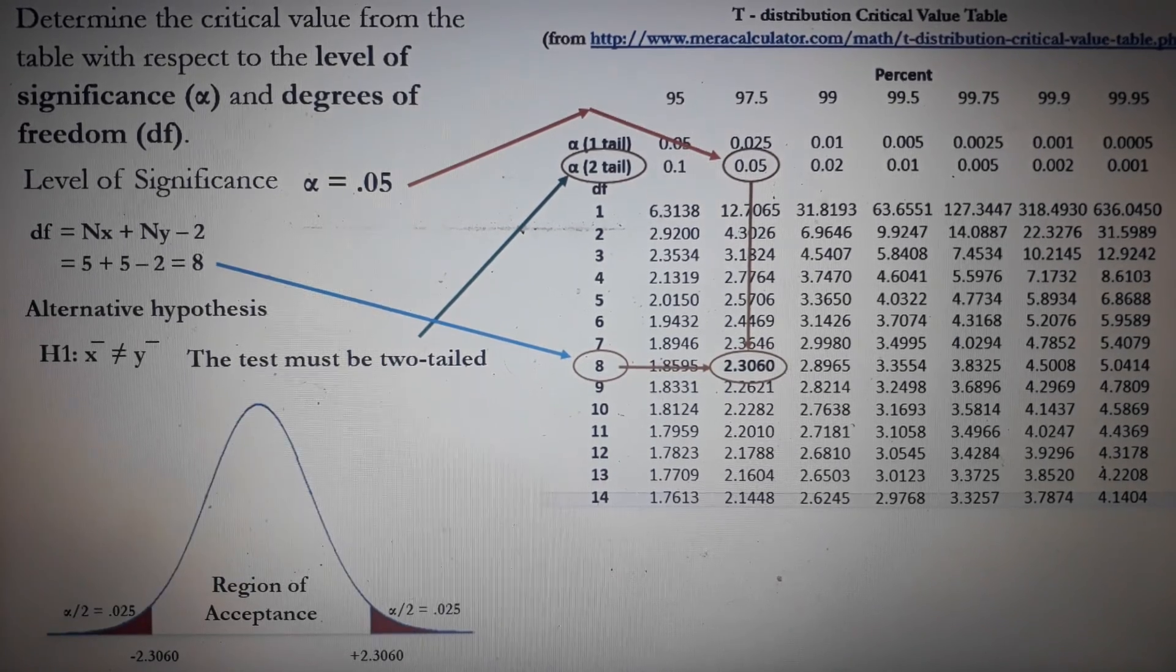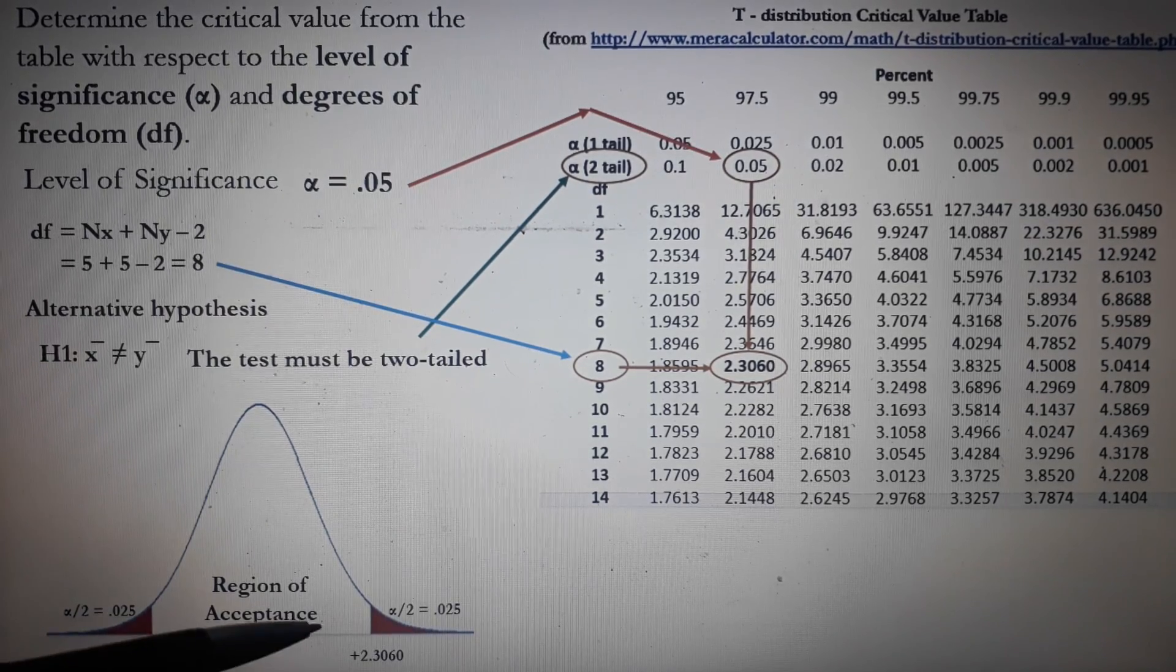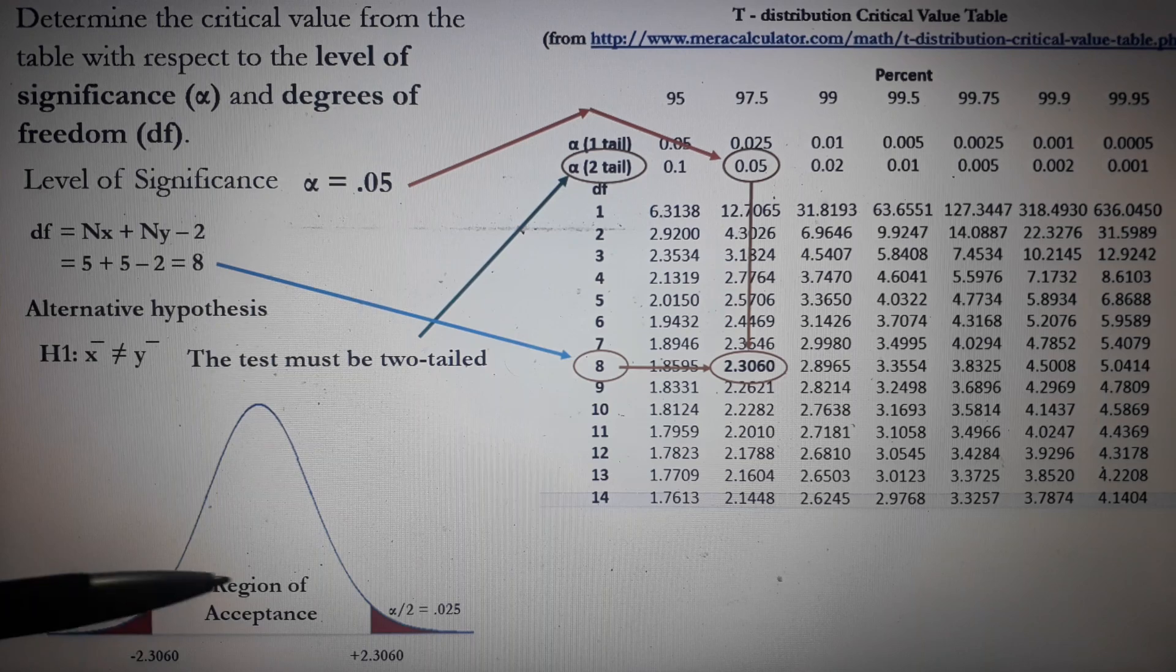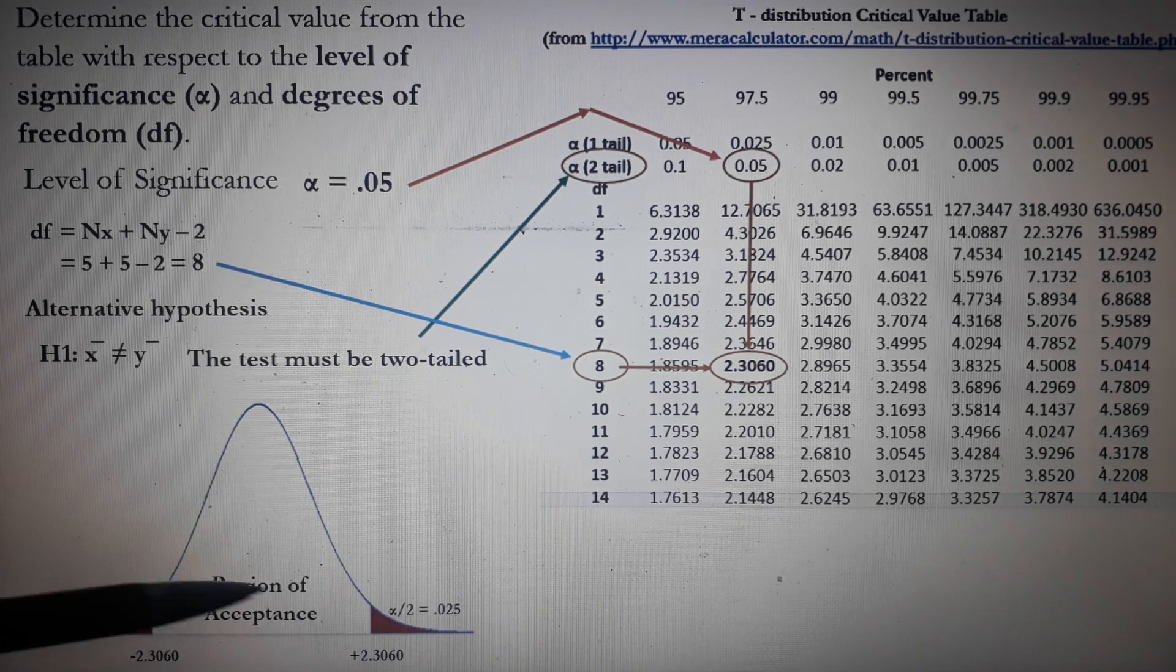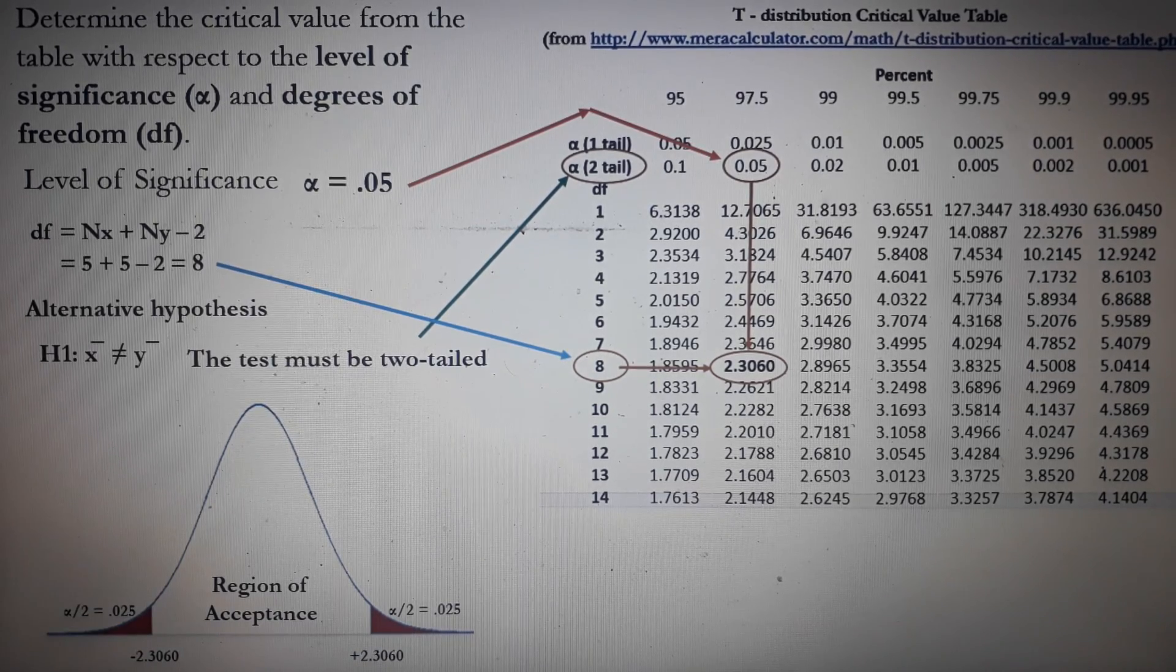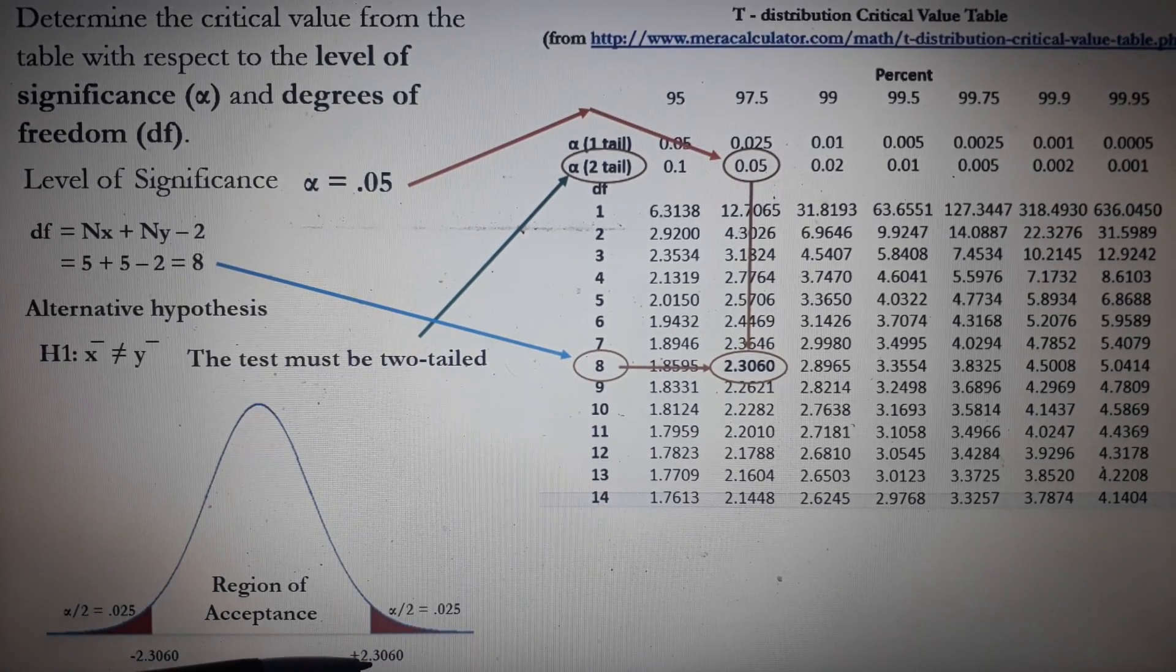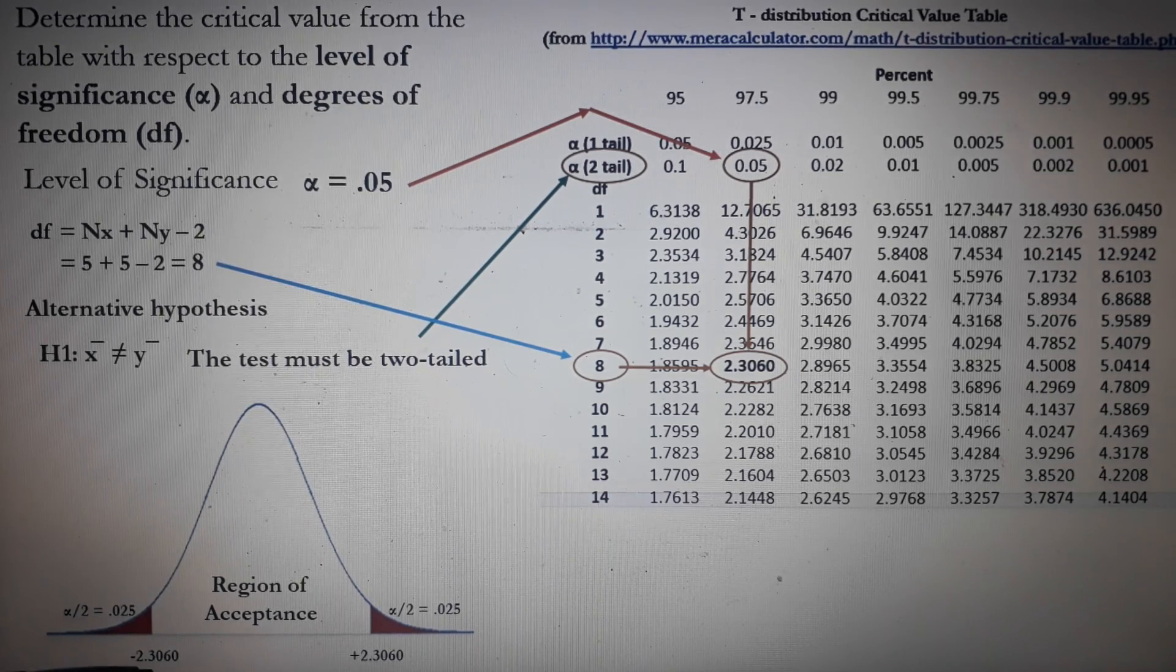So using our bell curve, the unshaded part is the region of acceptance where the null hypothesis will be accepted. Now, the two sides, which are the tails, represent the region of rejection. So our critical value on the right side is positive 2.3060. On the left side, it's negative 2.3060.